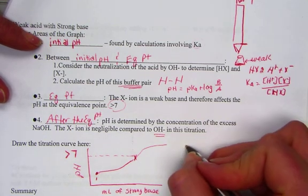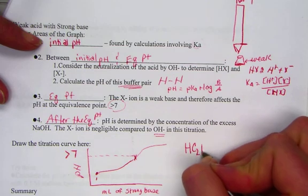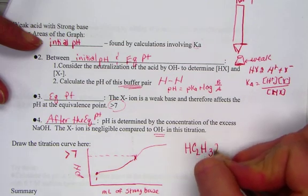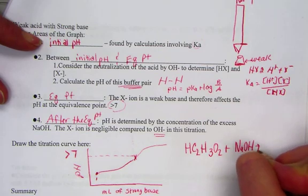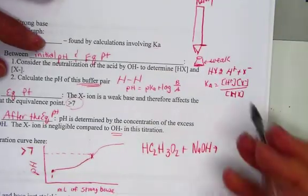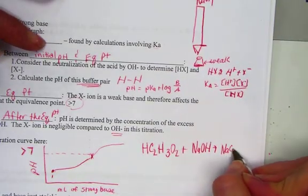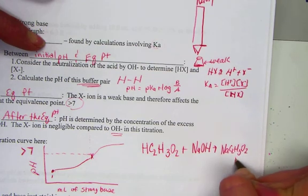So considering what we've said, let's take a weak acid, HC2H3O2, and titrate it with a strong base, NaOH. And if I think about the product side, we would come up with sodium acetate and water.